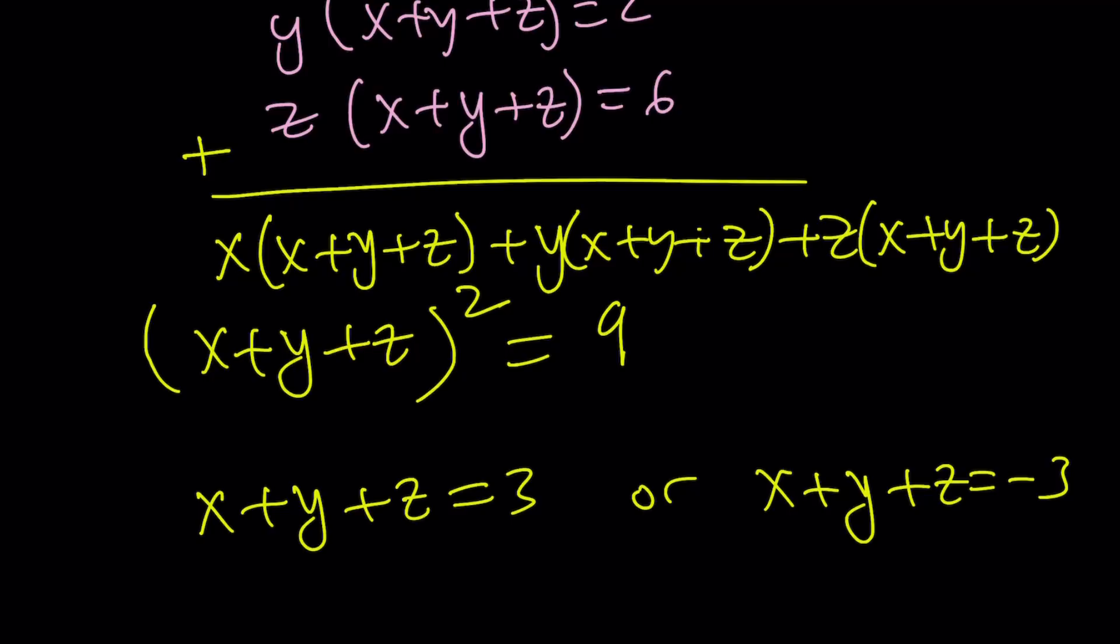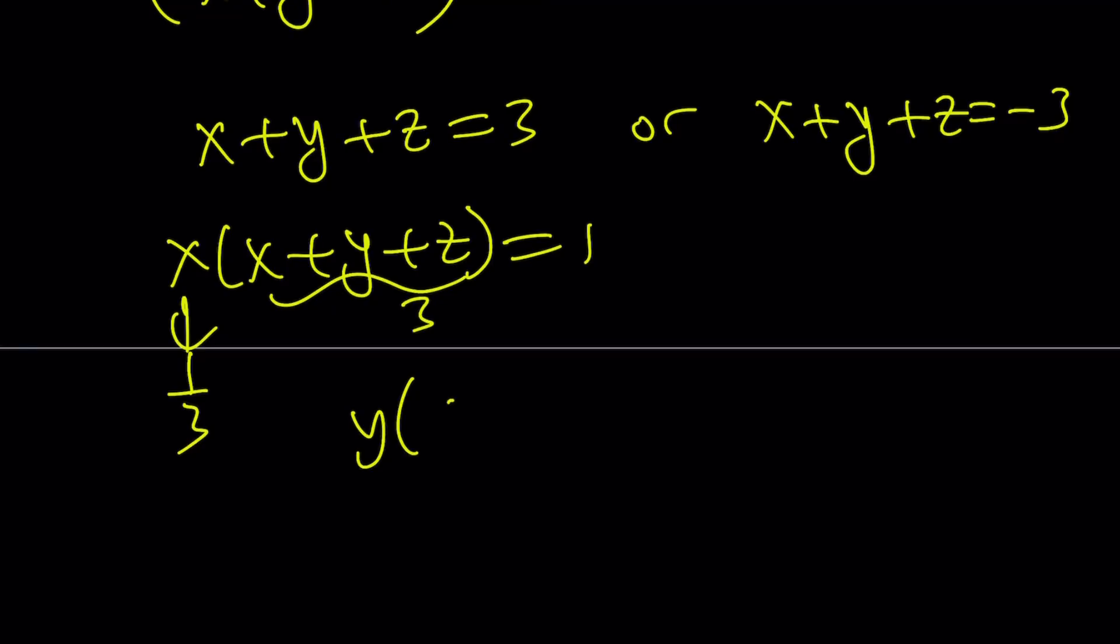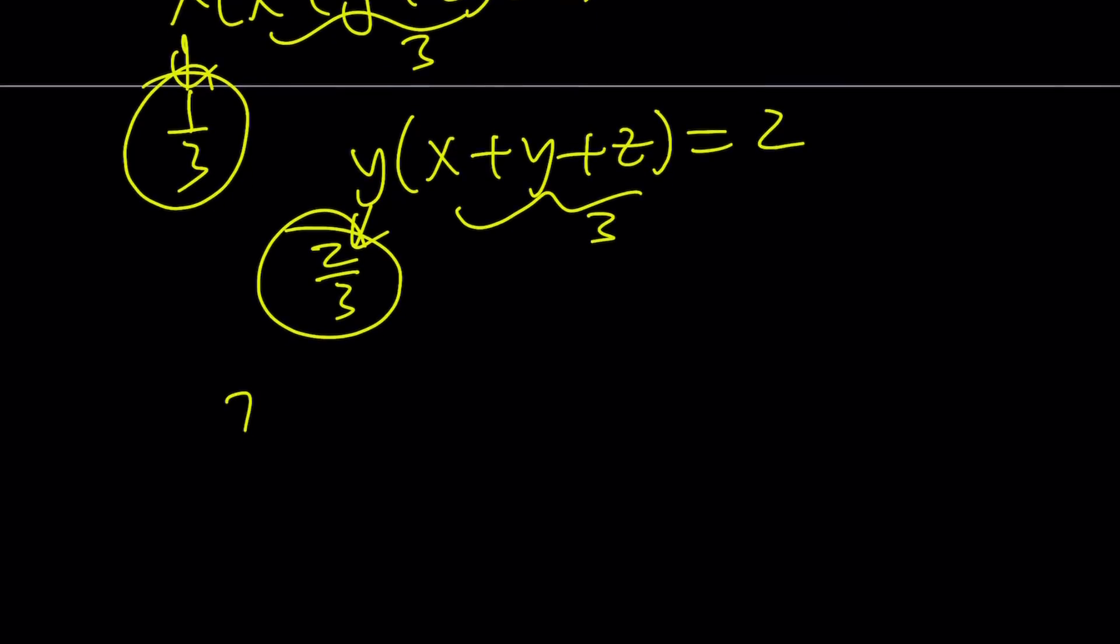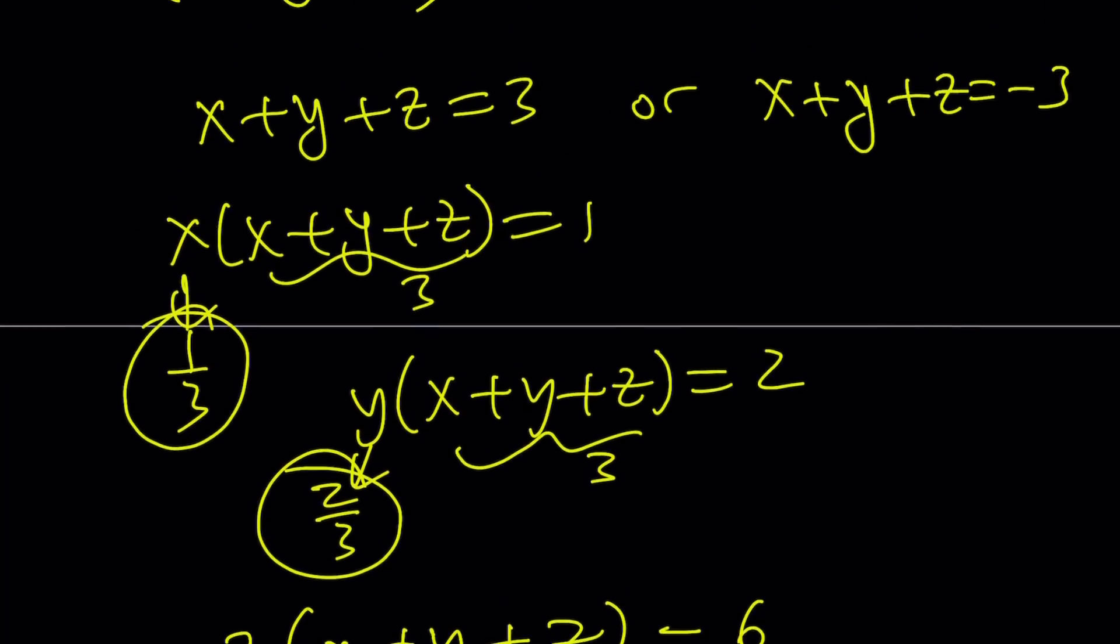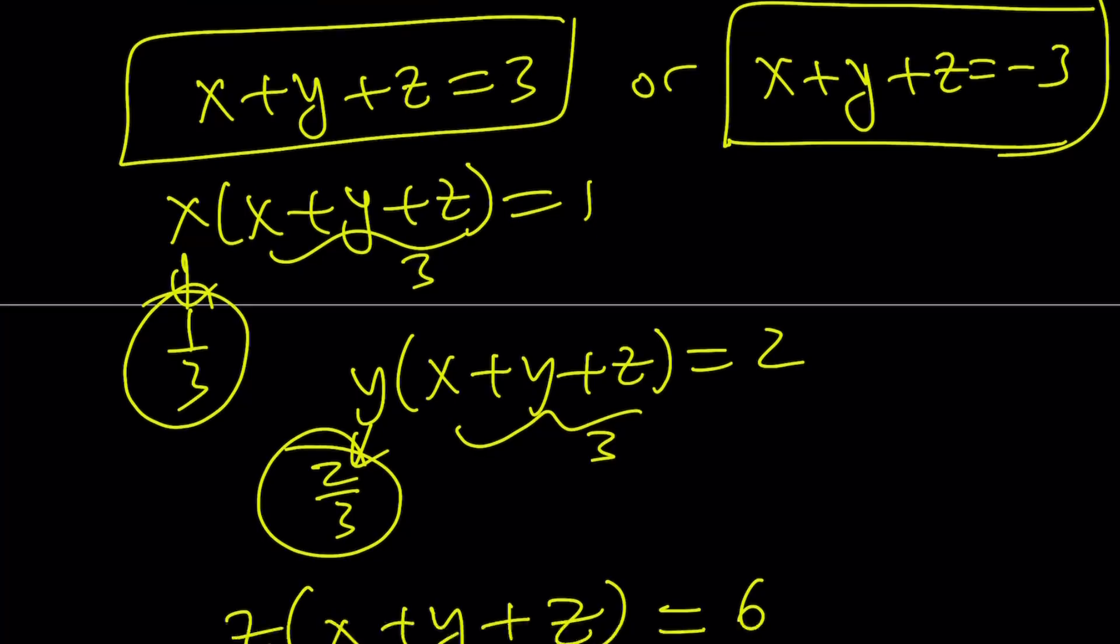And then by looking at each of these equations, it doesn't really matter which one, but let's start with the first one. If x plus y plus z is equal to 1, that means x is equal to 1 third because this is 3, x needs to be 1 third. And pretty much the same way you can find the other variables. This is equal to 2, so this is 3. Therefore, this needs to be 2 thirds. x is 1 third, y is 2 thirds. And finally, with z, we get z times x plus y plus z is equal to 6 and x plus y plus z is equal to 3. Therefore, from here, z becomes 2. But that's just one of the sets. If you go with x plus y plus z equals negative 3, then you're just going to get the opposites of x, y, z.